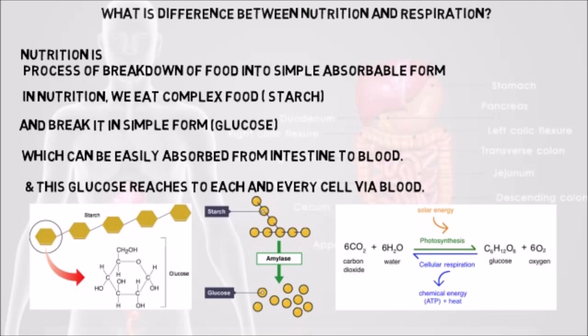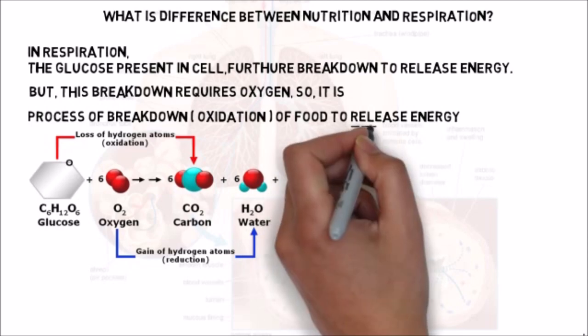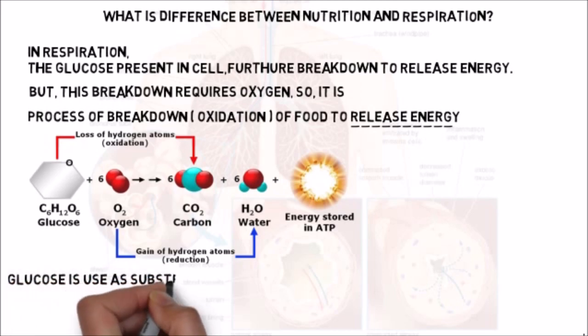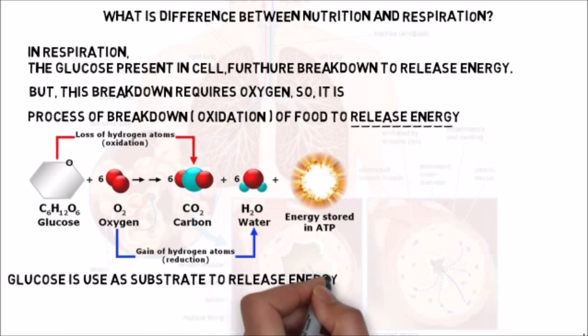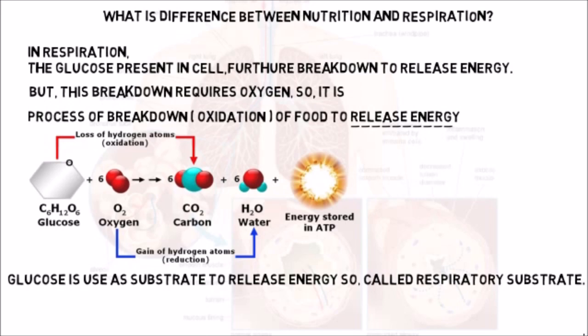Nutrition is a process of breakdown of food into simple absorbable form, whereas respiration is a process of breakdown or oxidation of food to release energy. The purpose of respiration is to release energy from absorbed food in the cell. Here in this process, glucose is used as a substrate to release energy, so it is called respiratory substrate. Any substance used to produce a product is known as a substrate. In respiration, mainly glucose is used, so it is called the respiratory substrate.